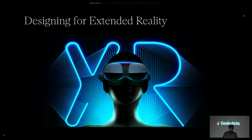We have three techniques for designing in extended reality: body storming, acting, and role playing. Body storming is about interacting with physical props in the real world. Picture yourself directing a movie — you are dealing with physical props like lights, acting out what happens next, following sequences frame by frame.